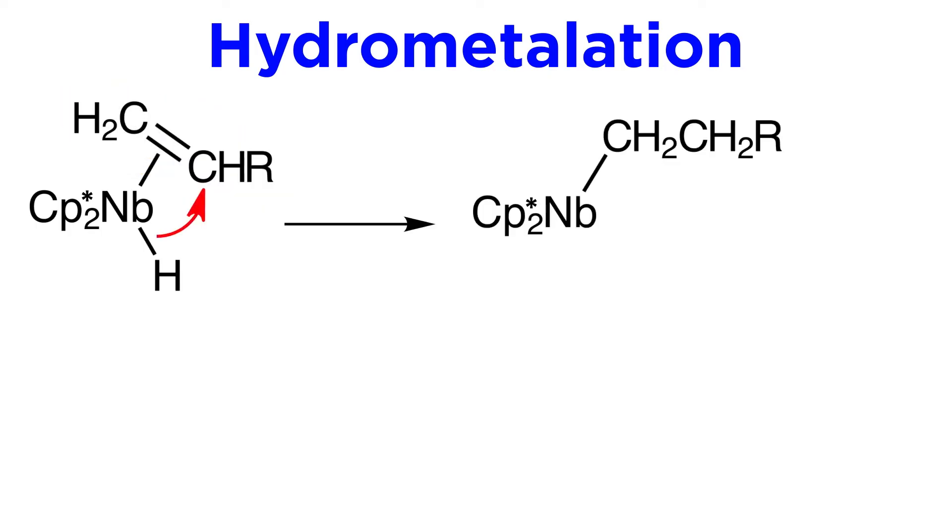Here is a similar example, which is called a hydrometallation. We see a niobium complex with two CP star ligands, a hydride, and an alkene. This hydride can migrate over to this carbon, and in doing so the alkene will shift from this pi interaction to this sigma interaction, and is thus now a simple alkyl ligand. Coordination of another ligand could then occur in the vacant position.